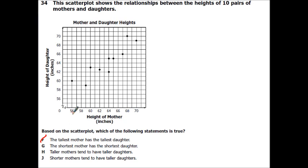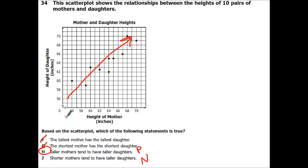The shortest mother has the shortest daughter — here's your shortest mom. This mom has a shorter daughter, so that can't be right. We've got taller moms tend to have taller daughters, so that would be a positive correlation. And this says shorter moms tend to have taller daughters — that would be negative. Since this is a positive trend, we know that is the answer. As the moms get taller, the daughters also get taller.